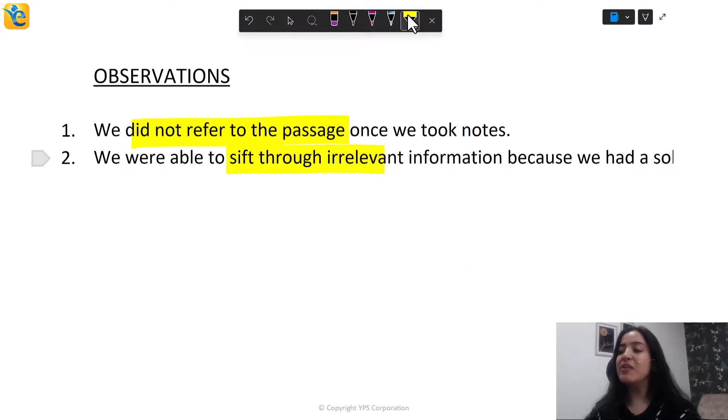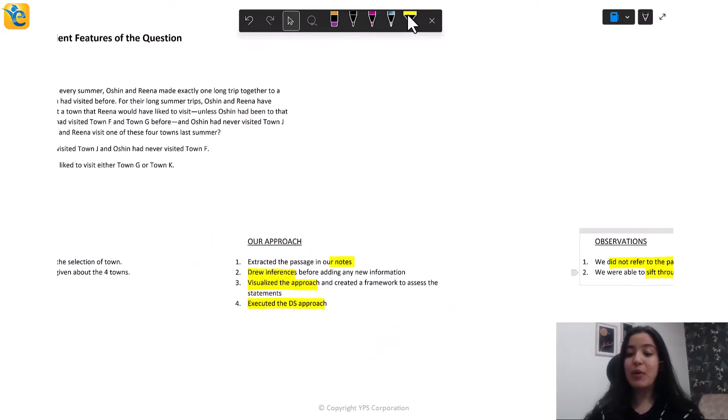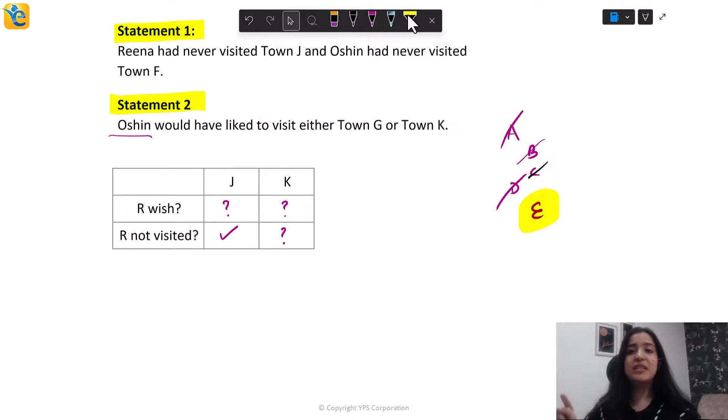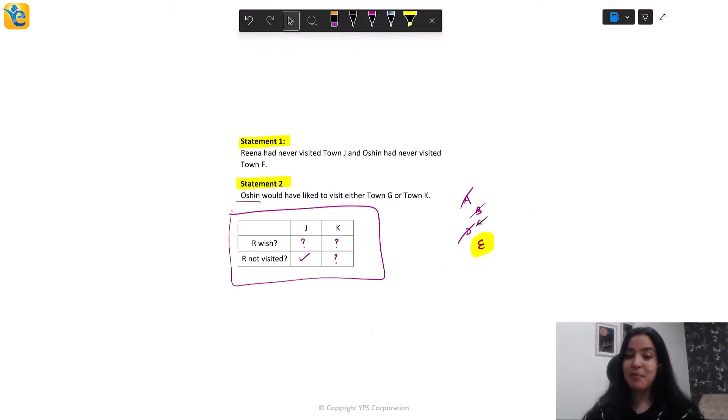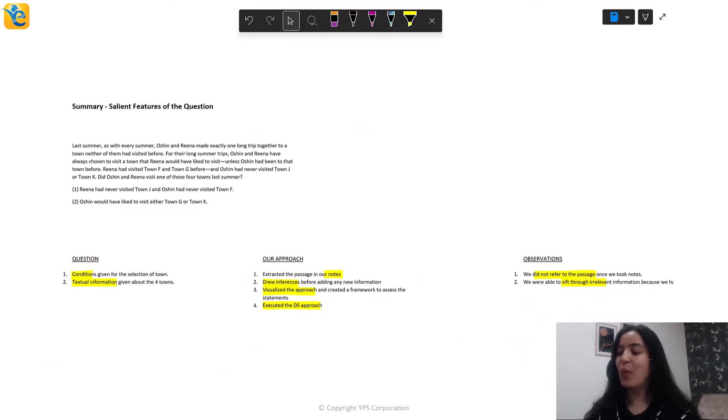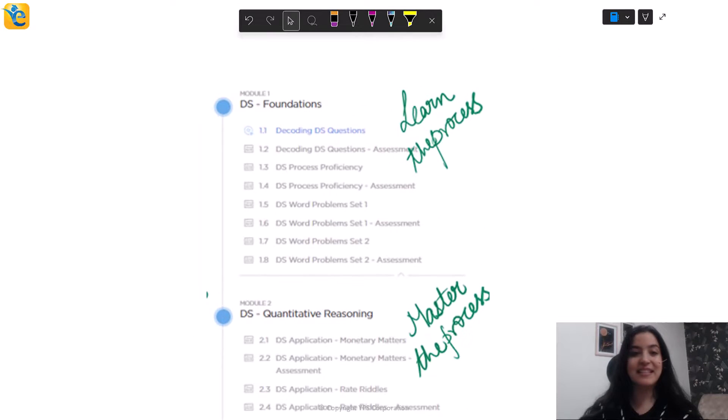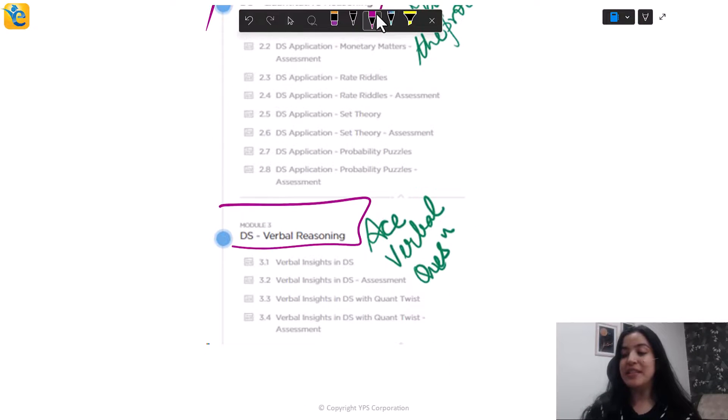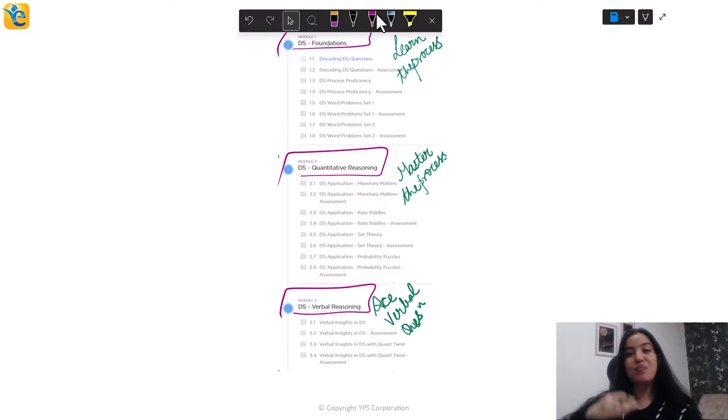Also, we were able to sift through irrelevant information because we had a solid framework to assess the choices. Case in point being this statement here. When we looked at statement two, we realized ocean visiting or wishing to visit is irrelevant because this approach that we had come up with, this visualization made it clear that it was only about Rina, not about ocean at all. Now, let me just quickly show you where all of this is taught in the EGMAT course. So here, look at this screenshot here. We teach you these skills in a progressive architecture in specially created data sufficiency course. After you learn the basics of data sufficiency here in the first module, you further hone your process by solving quant-based data sufficiency questions. And then the verbal reasoning module. So it all comes nice and slow, step by step, ensuring that you build skills as you go and you have the skill set required to go into the next segment.